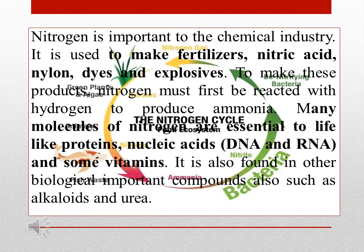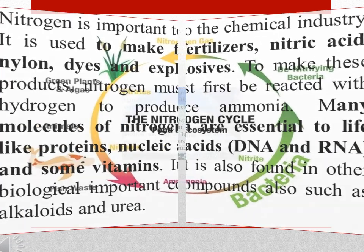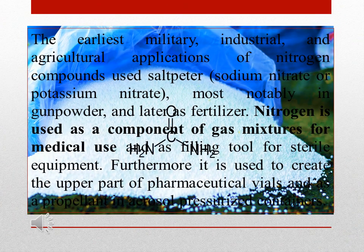Nitrogen is important to the chemical industry. It is used to make fertilizers, nitric acid, nylon, dyes, and explosives. For these products, nitrogen must first be reacted with hydrogen to produce ammonia. Molecules of nitrogen are essential to life. The earliest military, industrial, and agricultural applications of nitrogen compounds used saltpeter.